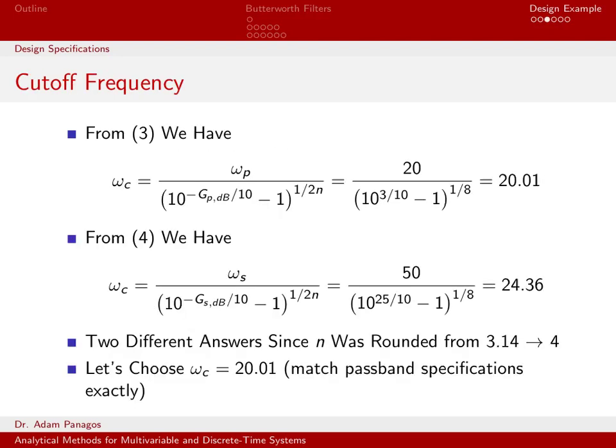What about the cutoff frequency? If you remember, there are two different equations that let us compute the cutoff frequency. If you have set your passband frequency gain and filter order, you can use equation three, which I've written right here, and plug in and compute the cutoff frequency. So if you plug those numbers in, omega p was equal to 20, G sub p in dB was equal to negative three, and the filter order we just determined was four, so two times four is eight. If you plug that into your calculator, you get 20.01.